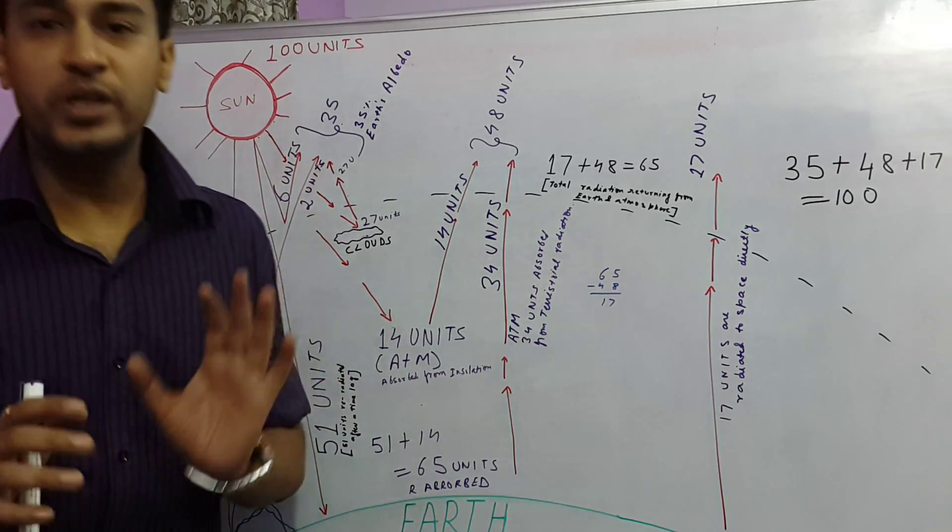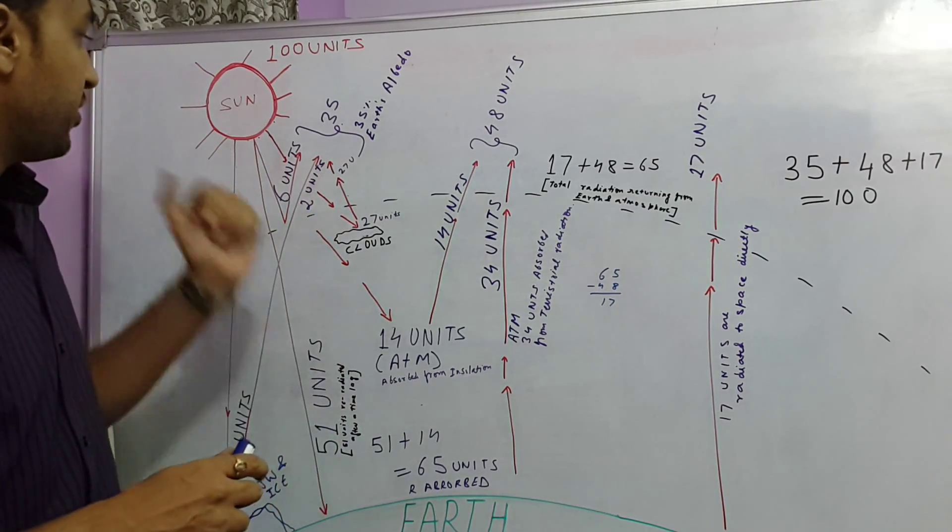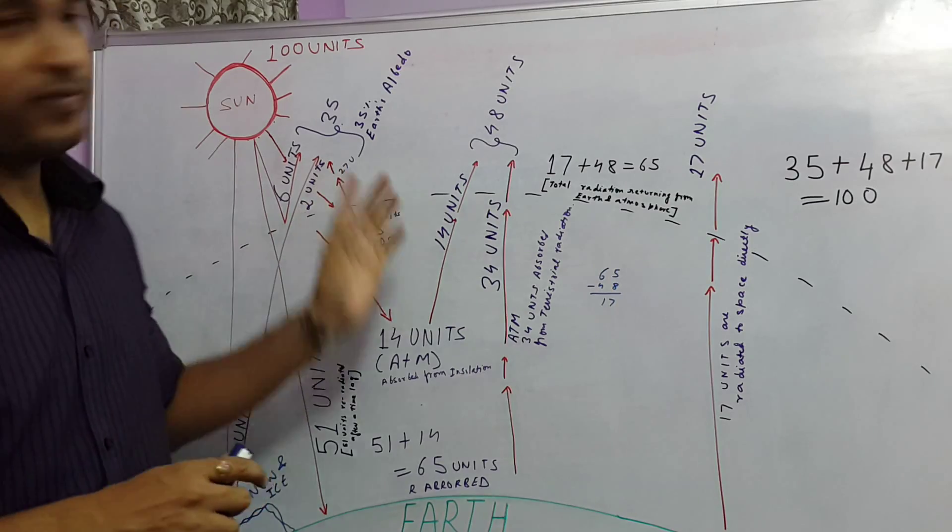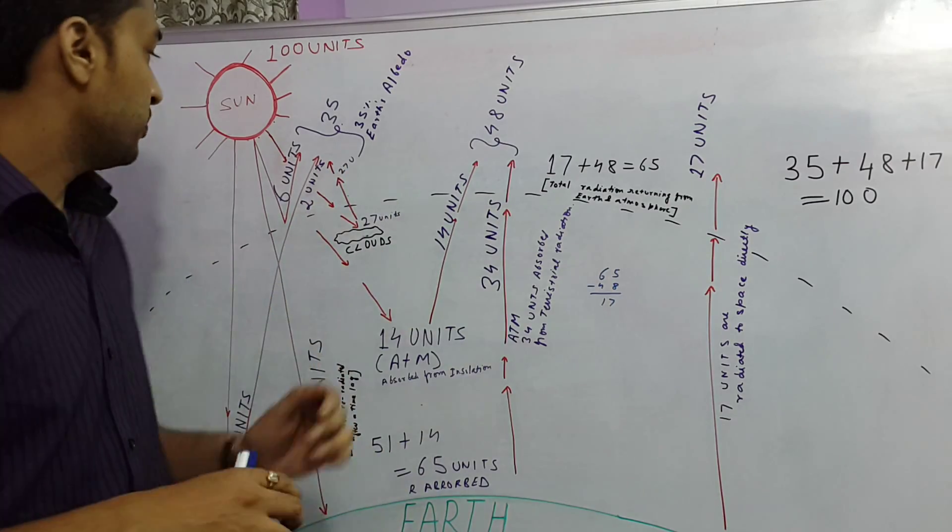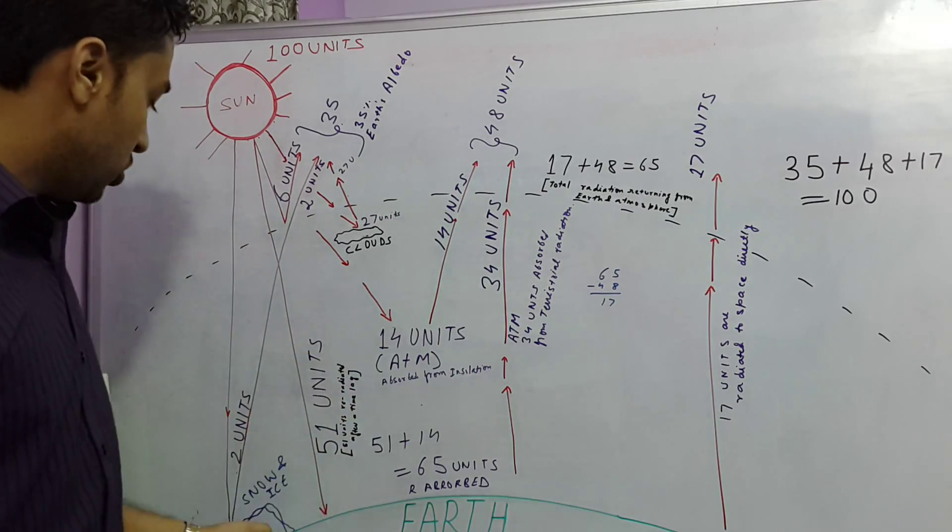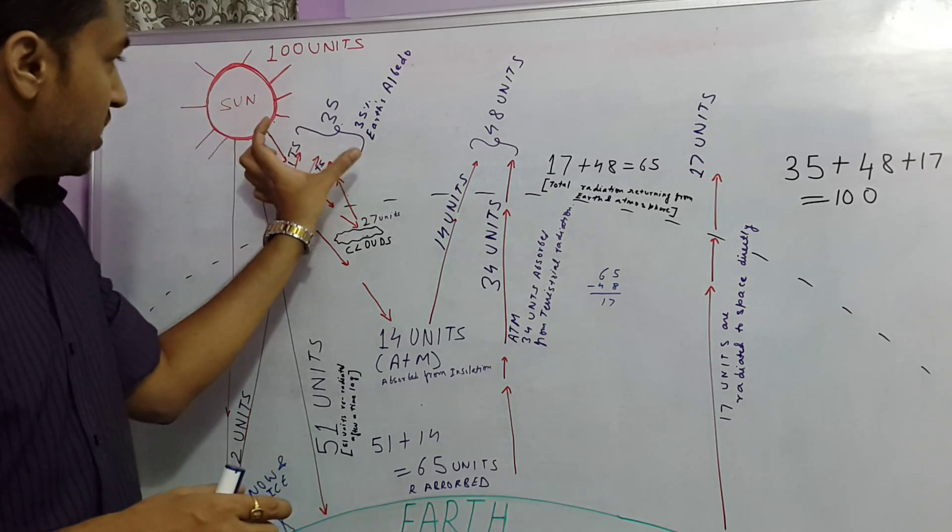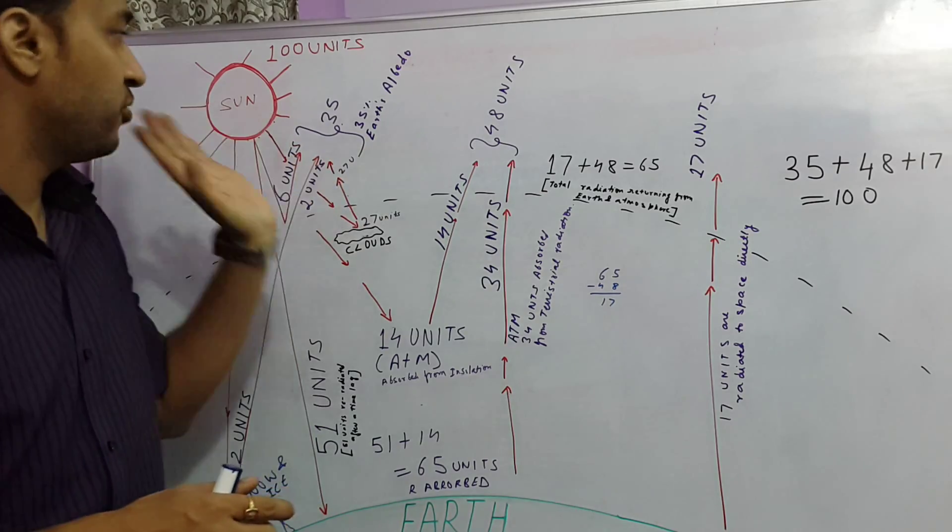Suppose about 100 units of insolation come from the sun. And out of these 100 units, 27 units are reflected back from the top of the clouds, and 6 units from the outer atmosphere and about 2 units from snow and ice. Now this becomes 35 units.